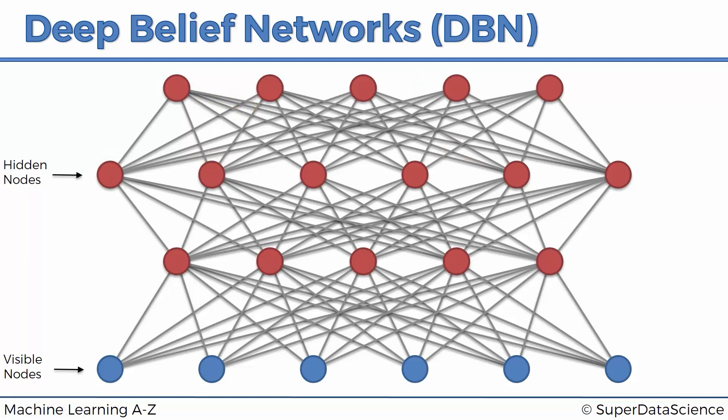And in a deep belief network, you've stacked up these RBMs and then you make sure that your directionality is in place for all of the layers except for the first top two. So basically, these layers—layers one, two, and three—the connections between them are directed downwards, whereas there's no direction in the top layers.